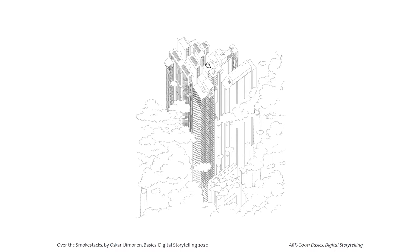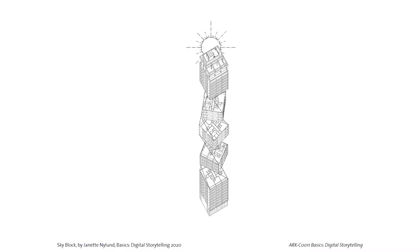Over the Smokestacks is a speculative drawing where already quite tall buildings are extended infinitely downward and made to disappear into Helsinki fog or clouds. What's successful here is the conscious decision that the clouds have very low detail, forming a lighter surface, while the buildings have a lot of detail — they stick out, making the focus clear.